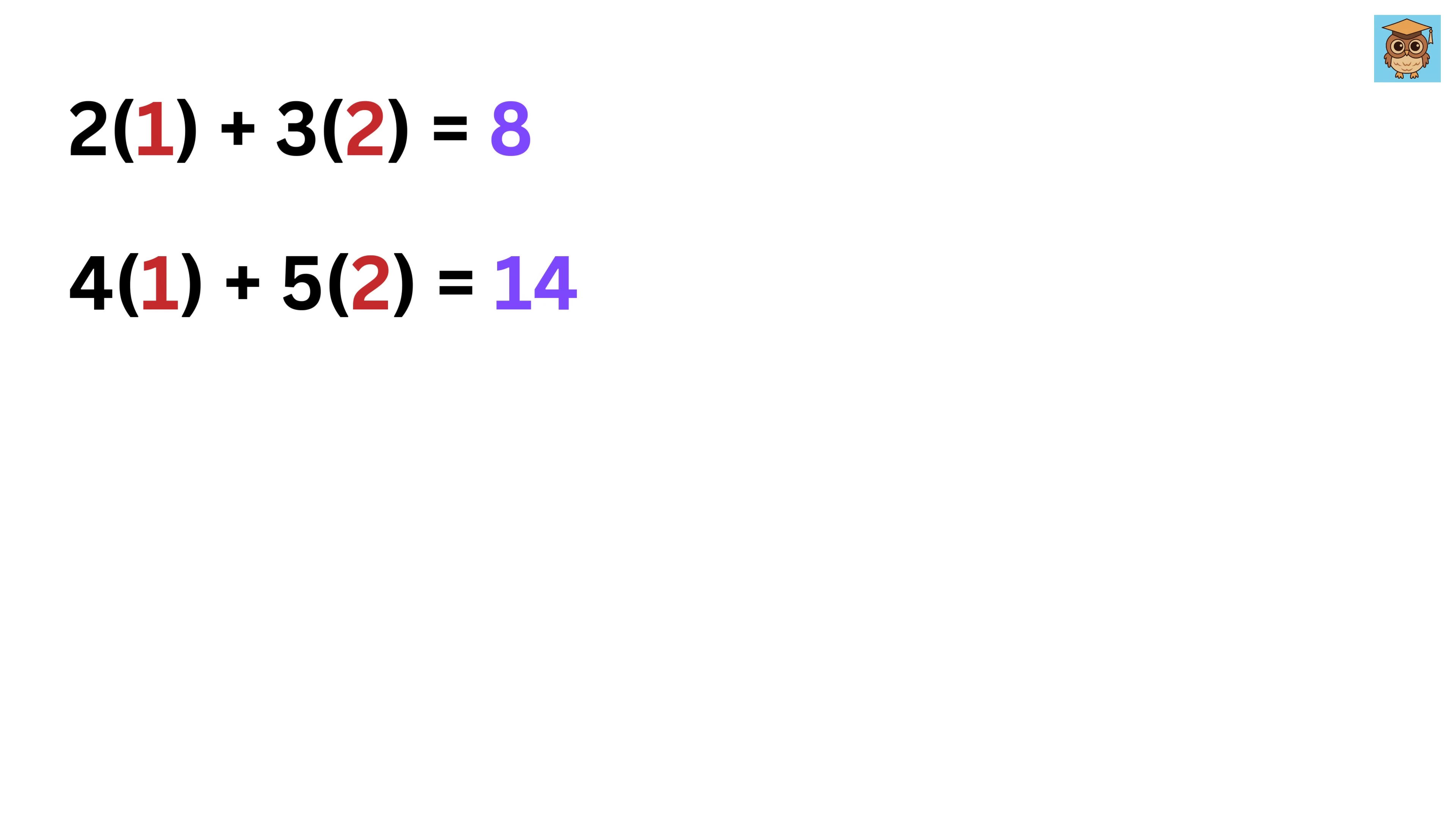Now, if we write this in a structured way, it looks like this. We started with the numbers 1 and 2, which we can think of as a vector. Then, we had a set of 4 numbers arranged in a grid: 2, 3, 4, and 5. These four numbers were applied to our original numbers, giving us a new set of numbers, 8 and 14.